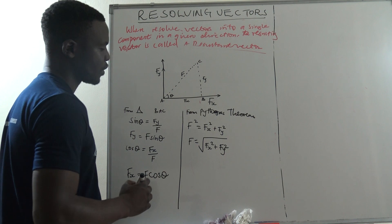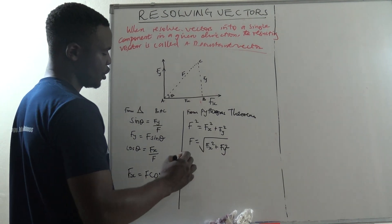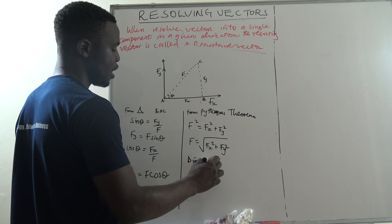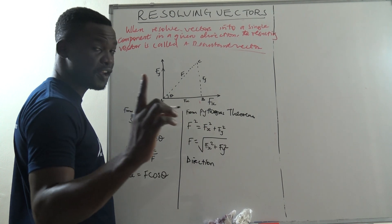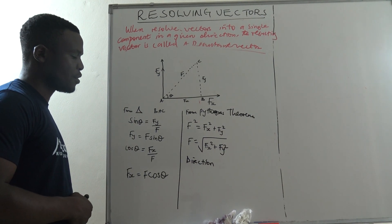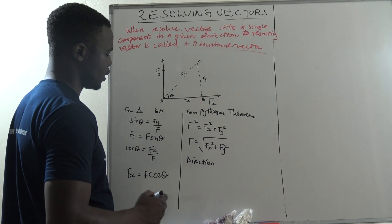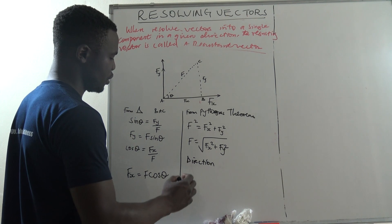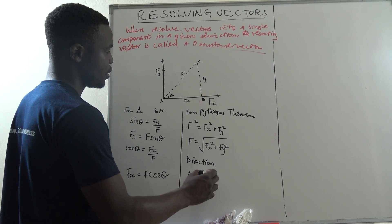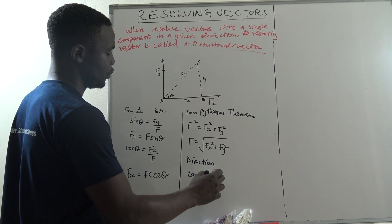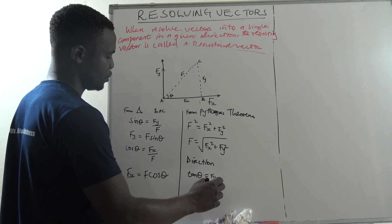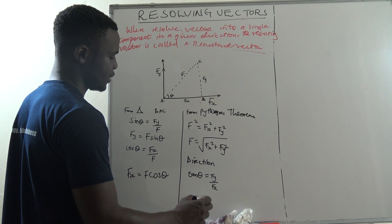But this is what we should know. We should know that this force is acting in a given direction. Now how do we get the direction? For us to be in position to get the direction, we use tan. We know that tan is opposite over adjacent.